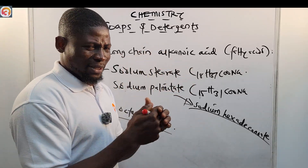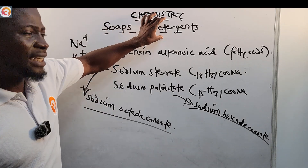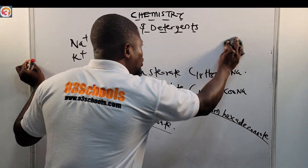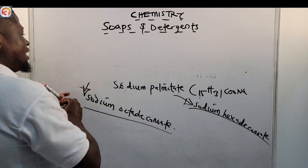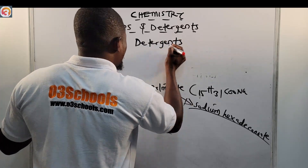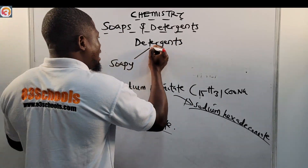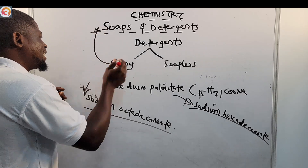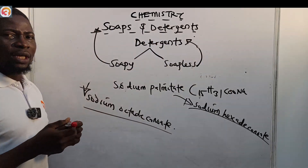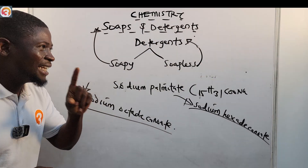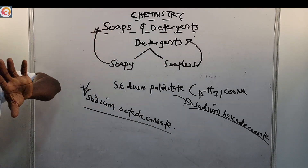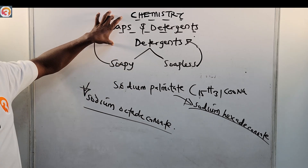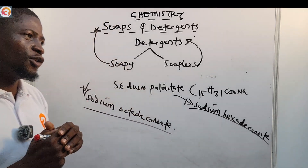Soaps and detergents are essentially the same in function — they both clean. The difference is in name. Detergents that clean are called either soapy detergents or soapless detergents. The soapy detergent is what we call soap, while the soapless detergent is what we simply call detergent. So: soapless detergent = detergent; soapy detergent = soap. Please let that stick to your medulla oblongata.